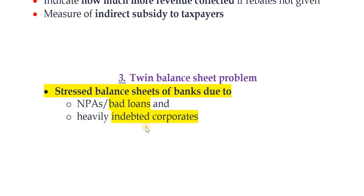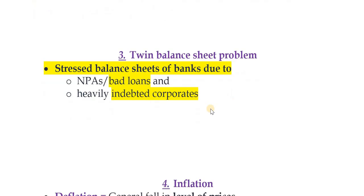The third topic is the twin balance sheet problem. It relates to the stressed balance sheets of banks due to two factors: first, non-performing assets or bad loans, and second, heavily indebted corporates. Both of these create the twin balance sheet syndrome or twin balance sheet problem.